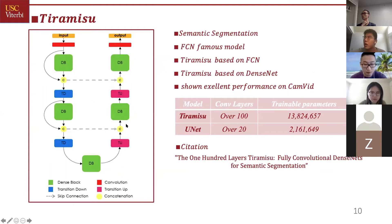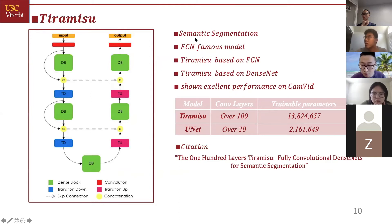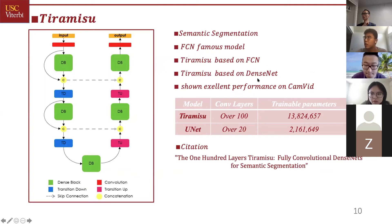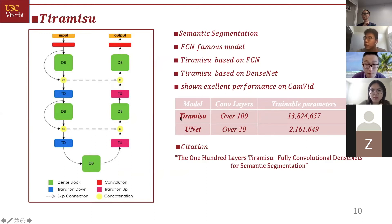Let me introduce the Tiramisu model. The Tiramisu model is a classical model for semantic segmentation. The Tiramisu model is based on the FCN model and also implements the ideas of DenseNet. As you can see, the Tiramisu model actually looks like the U-Net — it contains an encoder and a decoder structure. Here is a comparison of the Tiramisu model and the U-Net.